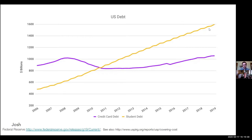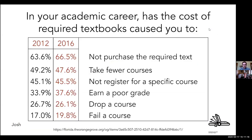Students are borrowing an ever-increasing volume of money to cover ever-increasing education costs — something the United Nations Declaration of Human Rights considers a human right. Looking at credit card debt versus student loan debt, student loans never checked up even after the economic collapse of 2008. Students borrow to cover a complex mix of costs, and course materials are one of those costs. National student debt in the United States is approaching two trillion dollars.